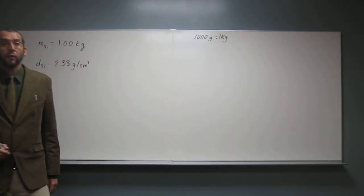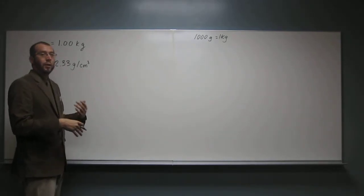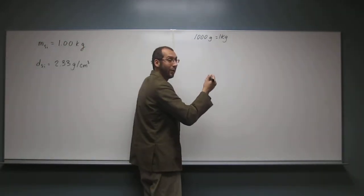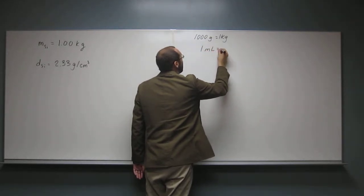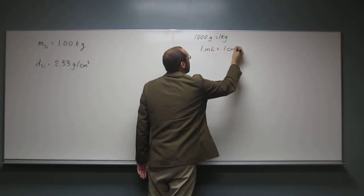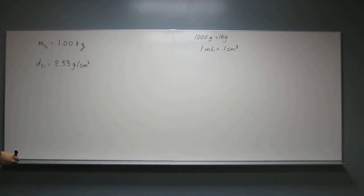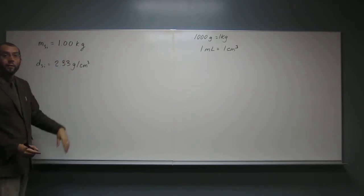So there's another conversion factor that you need to know because it wants it in milliliters as opposed to cubic centimeters. So you're going to have to learn how to convert those two. That one's an easy one to remember because one milliliter equals one cubic centimeter. So now we're going to have to use that information and these two things to figure out, well, what's the volume of silicon that we have.